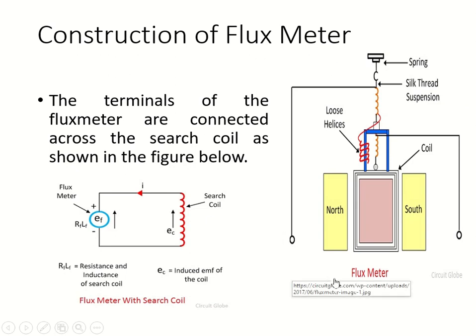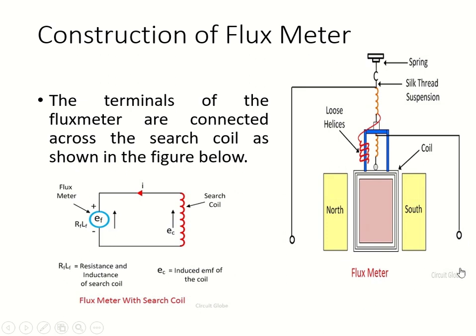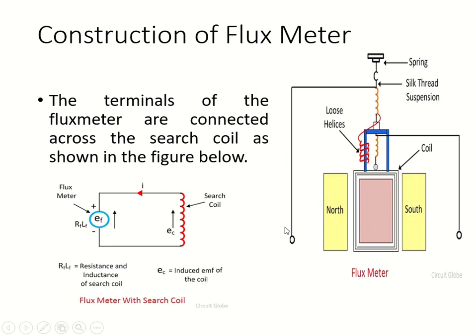The terminals of the flux meter are connected across a search coil. The search coil is an inductive coil whose flux is to be measured. You place the search coil between the two terminals. Here, Ef represents the EMF of the flux meter and Ec is the EMF induced in the search coil.